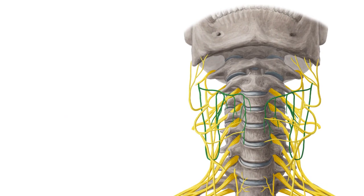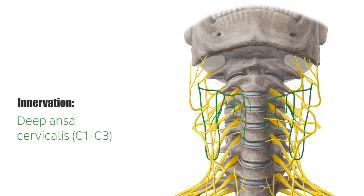All four infrahyoid muscles are supplied by the deep ansa cervicalis, which arises from the cervical plexus.